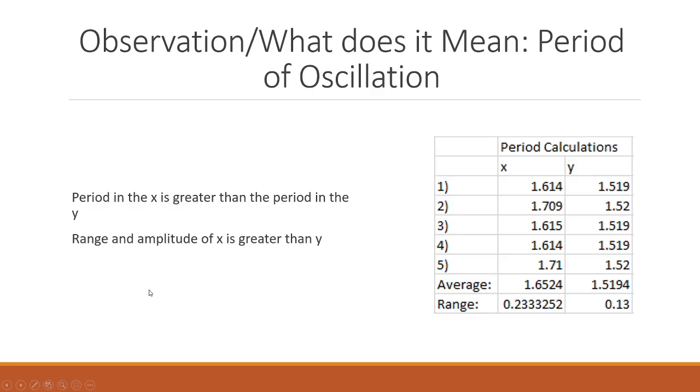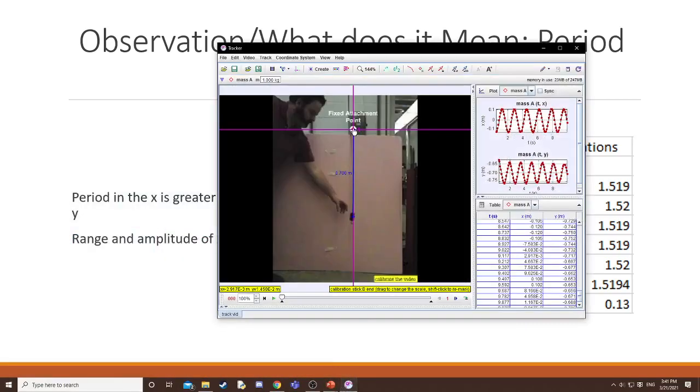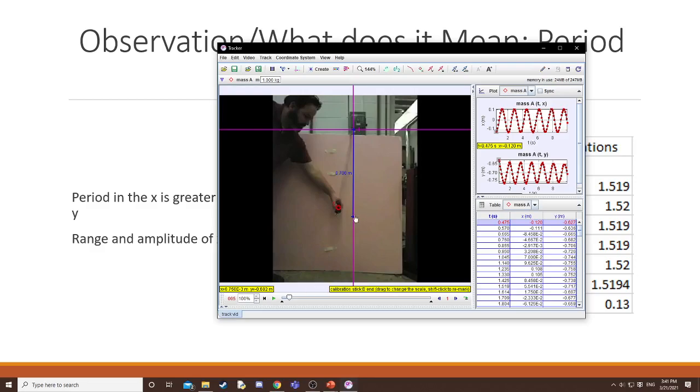For observations, I use the app Tracker to analyze the mass-spring system. Here I have the attachment point of the spring set to the origin, this is the negative y direction, this is the negative x direction.